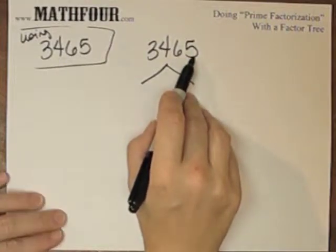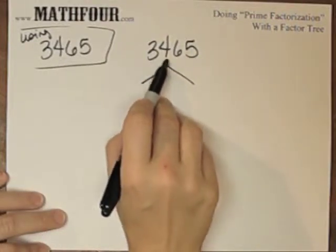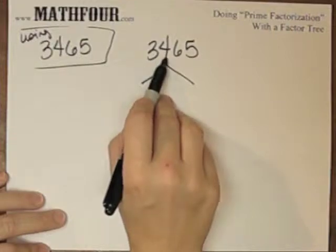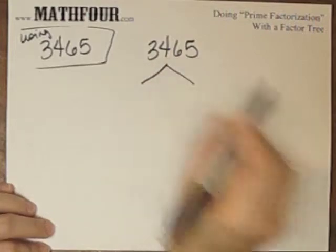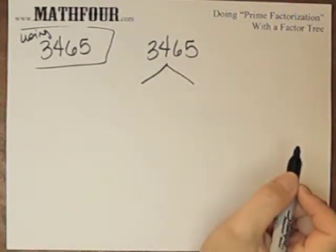Well, I see a 5 at the end. I also can see, let's see, 3 plus 4 is 7, plus 6 is 13, plus 5 is 18, so I know that 3 also goes into this.